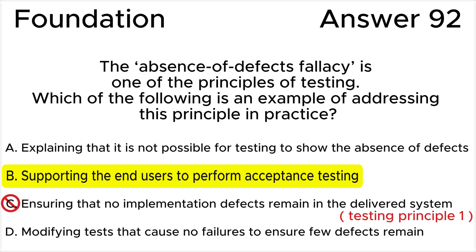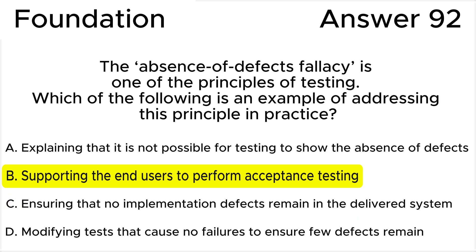Answer C is invalid because it is not possible to ensure that no implementation defects remain in the delivered system. The 'testing shows the presence not the absence of defects' principle explains that while testing can detect the existence of defects in the test object, it is not possible to demonstrate that there are no defects and therefore guarantee its correctness. This answer deals with testing principle one.